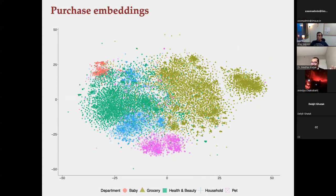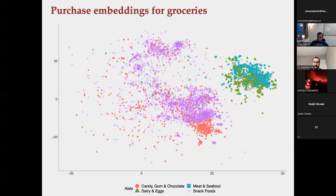The axes themselves are meaningless — only proximity matters. Remarkably, without being told which product belongs to which category, the algorithm recovers the category structure based purely on consumer consumption patterns. For example, within grocery products, meat/seafood and dairy/eggs cluster together on one side, while candy, gum, chocolate, and snack foods cluster on the other.